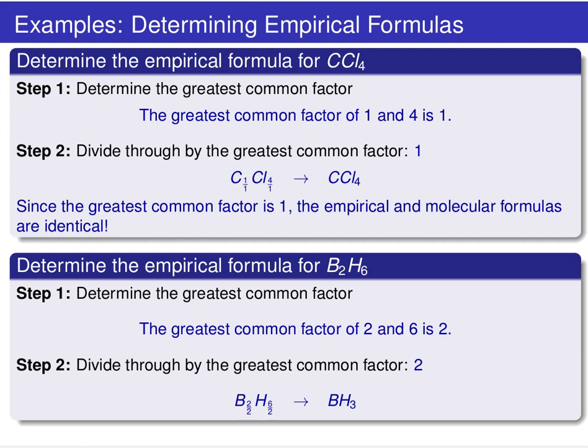So as another example, we could find the empirical formula for CCl4. Well, in this case, the greatest common factor is 1. We already have in the molecular formula one of the elements with only a single atom. So as a result, the empirical formula, which we obtain by dividing both of those subscripts by 1, returns the exact same formula. So in this case, the empirical and molecular formulas are identical.